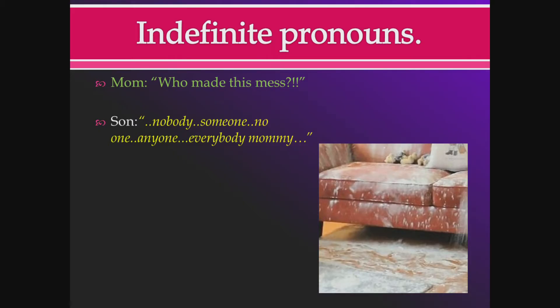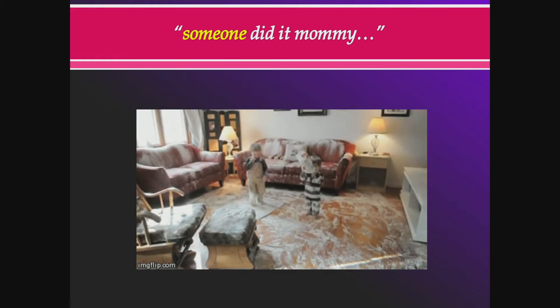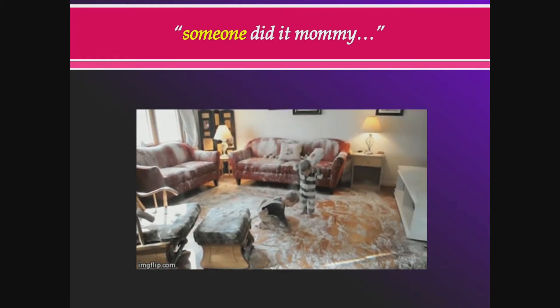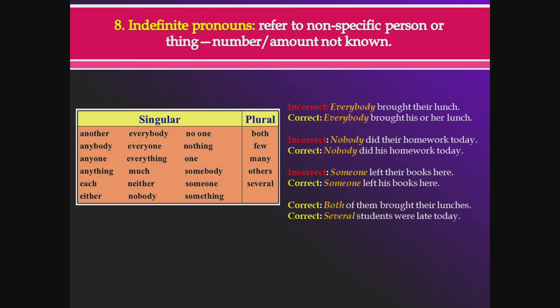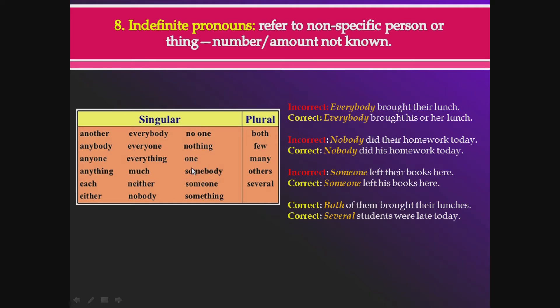Imagine a mother walks into a room and sees a big mess. She asks who made this mess. The child responds: 'Nobody, mommy... somebody... no one... anyone... everybody, mommy.' The child definitely knows their indefinite pronouns! That's the idea — the exact person is not specifically known. 'Somebody did it' uses an indefinite pronoun.